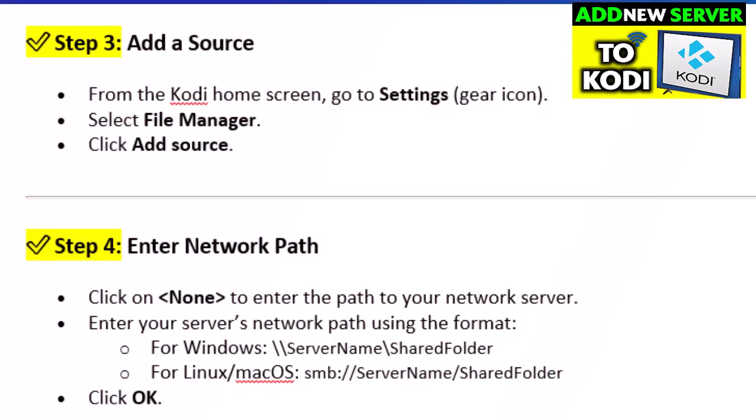Step 3: Add a source. From the Kodi home screen, go to Settings (gear icon), select File Manager, and click Add Source.